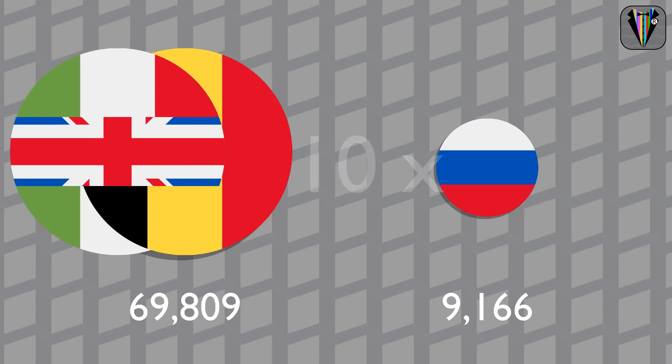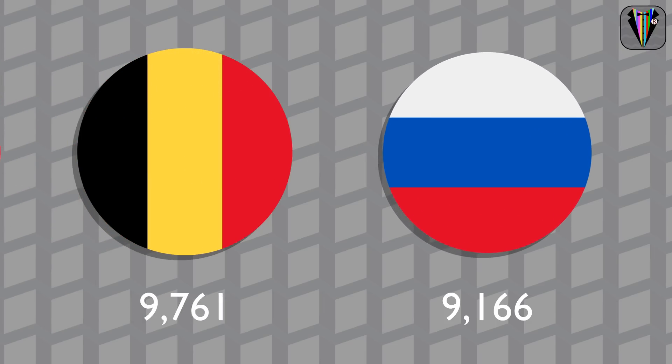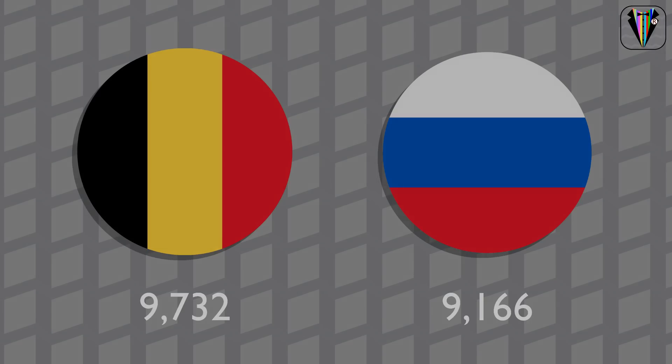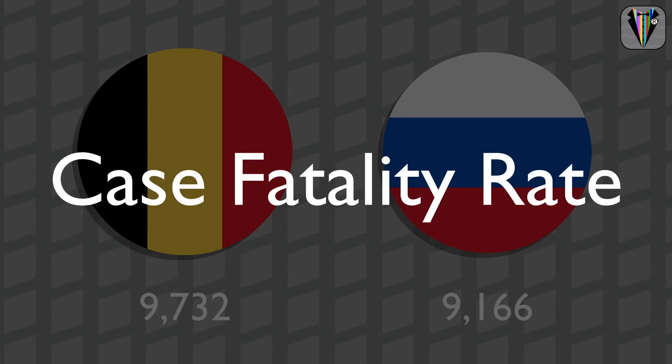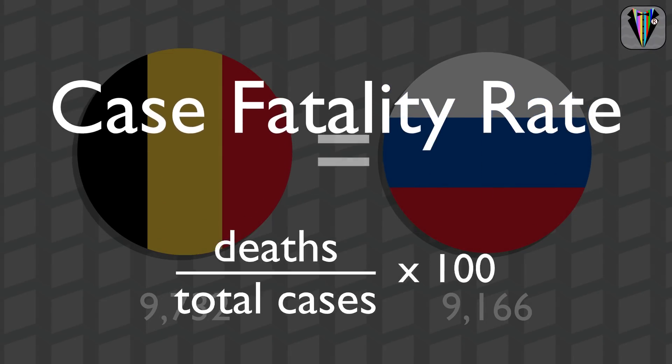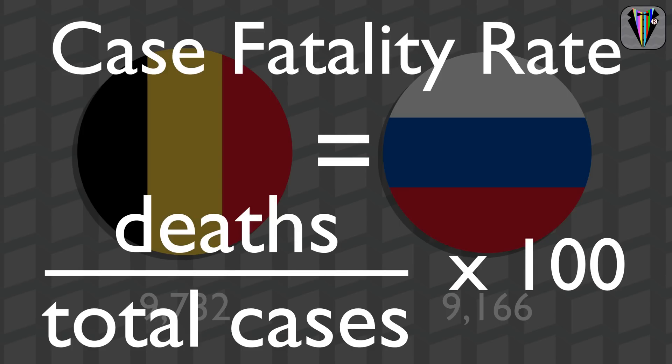Even Belgium has more deaths than Russia. But again, the number of deaths alone does not tell much. So to emphasize the difference between countries, we should use the case fatality rate — which is the deaths compared to the total cases, or simply the number of people who died in every 100 infected people.